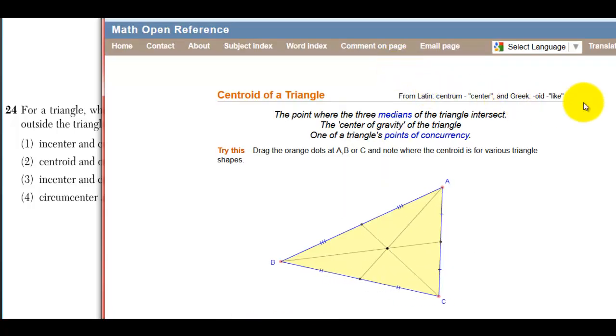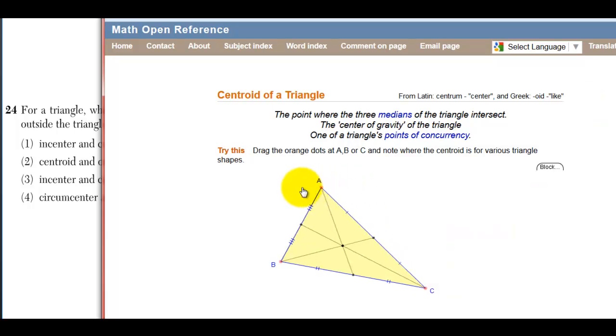The centroid of a triangle is where the medians intersect. We could sit here all fucking day making obtuse triangles, right triangles, and acute triangles for the centroid, but it's also always going to be inside.